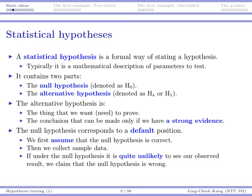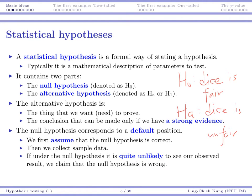So in that example, our H0 would be that the dice is fair, because before we do any experiments or collect any data, we have a default position that the dice is fair. Under that assumption we roll the dice, and we found it so impossible for that to happen. Then we conclude that H0 is wrong — the dice is unfair — because we have that strong evidence. That's the basic idea.